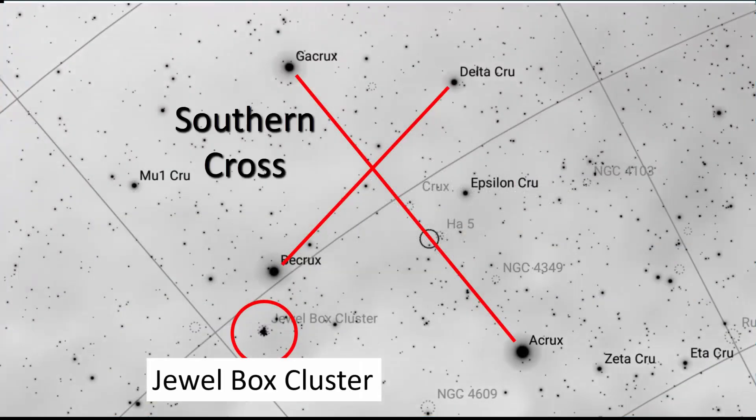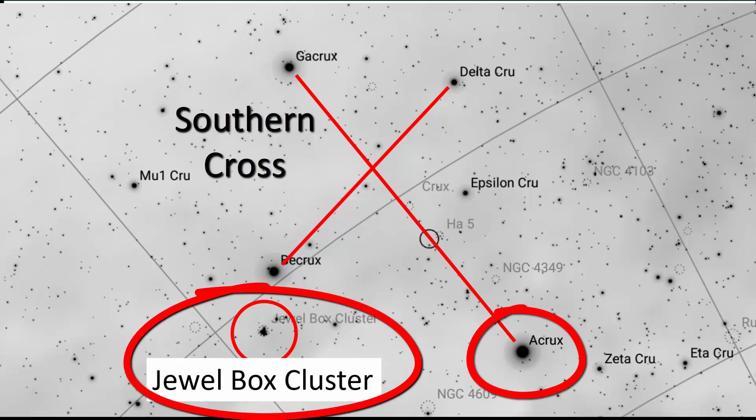Star hopping involves you locating an initial bright star located close to your desired target object. This bright star will be your starting point. You then need one or perhaps a few stars on your planetarium app that can lead you to the location of your desired target from your initial bright star point.